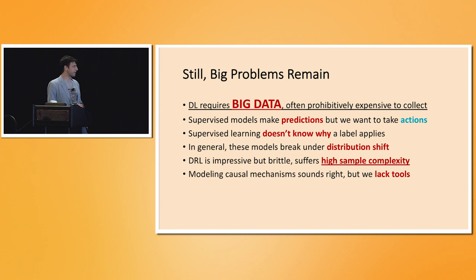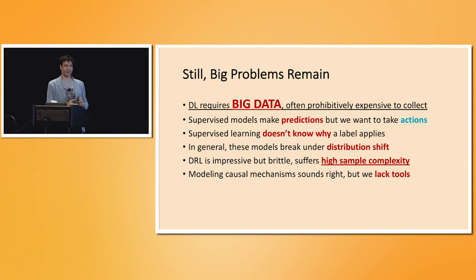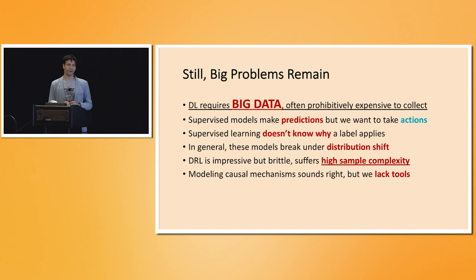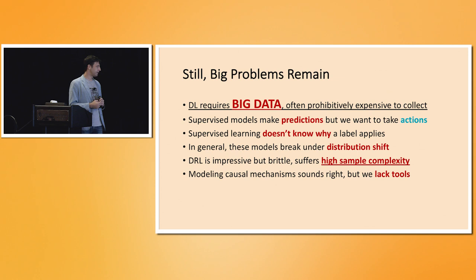We also have systems that are quite brittle — they tend to depend on superficial statistics of the data and break under even minor distribution shift. Deep reinforcement learning, which deals with the effects of actions, is also extremely data dependent. To give a sense of the data scale: computer vision systems are trained on over a million images, speech recognition systems on over 11,000 hours of annotated phonemes, and named entity recognition uses 625,000 annotated words in the OntoNotes corpus.